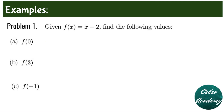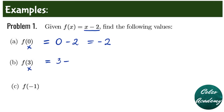To evaluate f of 0, the 0 here means the value of x. So we simply substitute 0 into the x in the function x minus 2. So we have 0 minus 2, which is equal to negative 2. For letter B, to evaluate f of 3, we substitute 3 into the x. So we have 3 minus 2, and that is equal to 1.